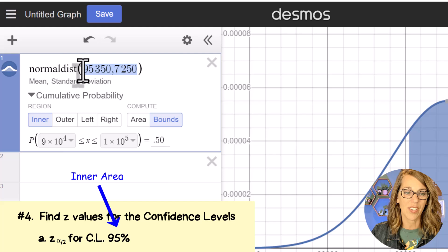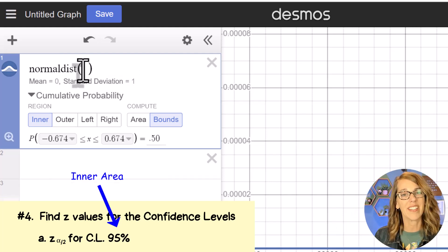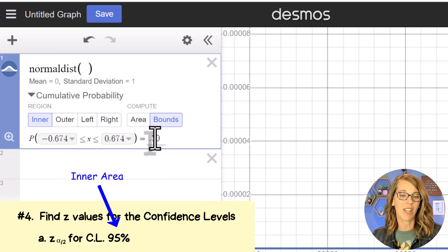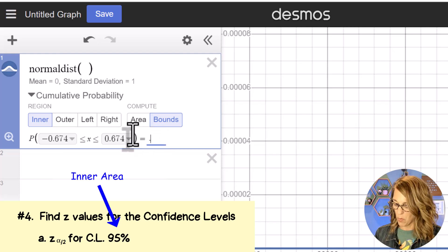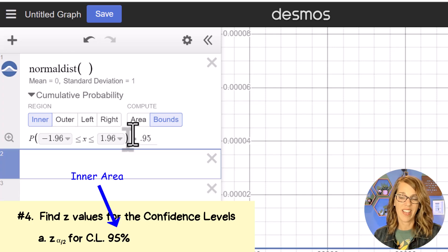you can just highlight and then delete what we had in there for the mean and standard deviation. And I'm right back to zero and one. We have a confidence level of 95%. So that means that I want my inner area to be 0.95. And then enter.